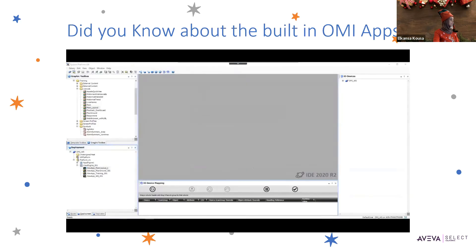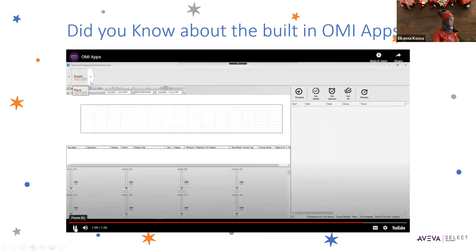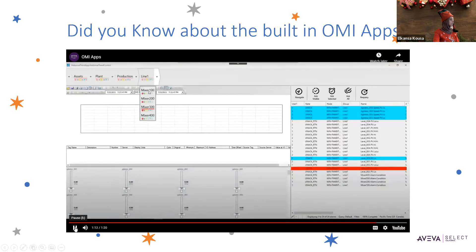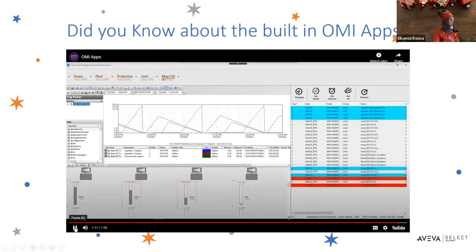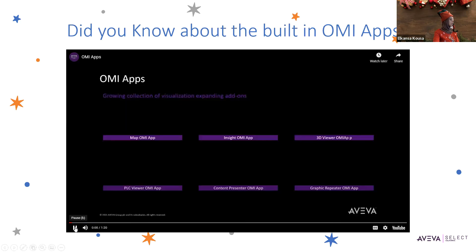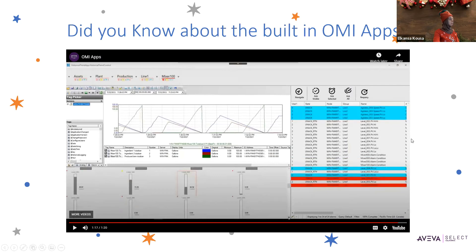Pane three is used to show the alarm control app, and pane four is used to display another layout that was previously created. Once we are done editing the layout, we deploy the view app and launch it in the OMI application manager. Once we have added all the OMI apps into the panes where we want them displayed on the OMI screen, we deploy the view app and launch the application.